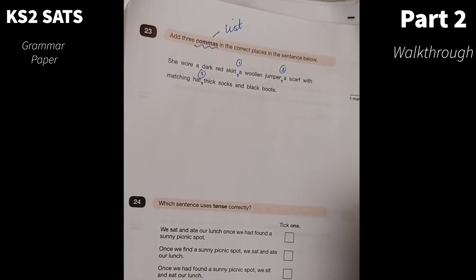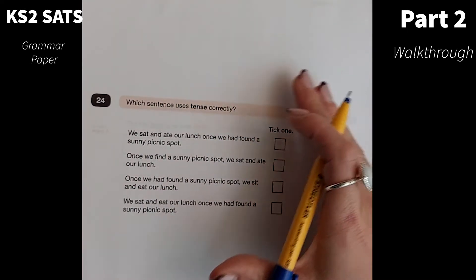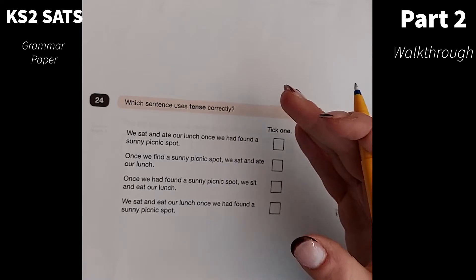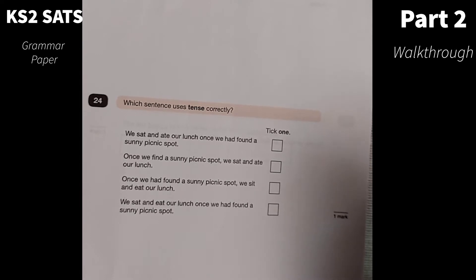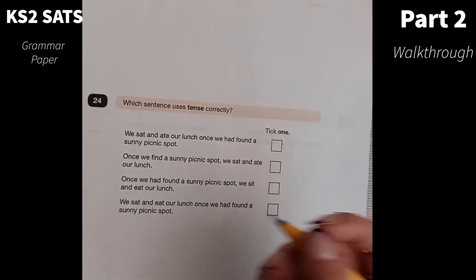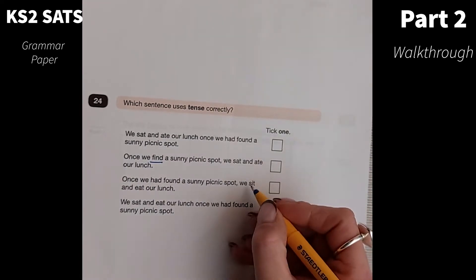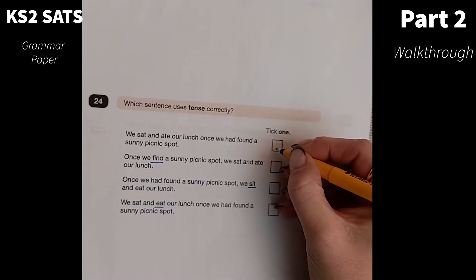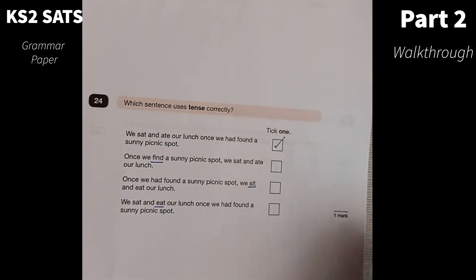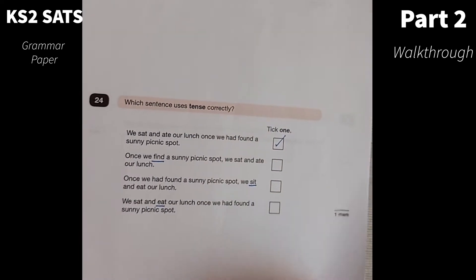Number 24. Which sentence uses tense correctly? For these kinds of questions, you literally need to go through and see which ones work, which ones don't. We sat and ate our lunch once we had found a sunny picnic spot. Once we find a sunny picnic spot, we sat and ate our lunch. So that's not correct there. Once we had found a sunny picnic spot, we sit and eat our lunch. That's the mistake there. So the first one uses tense correctly. What I would say is check all of the options before you make your answer choice.